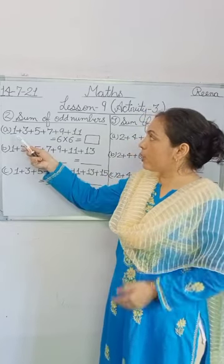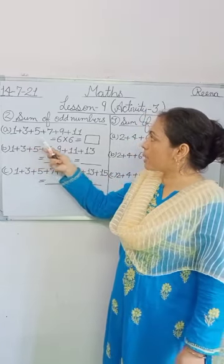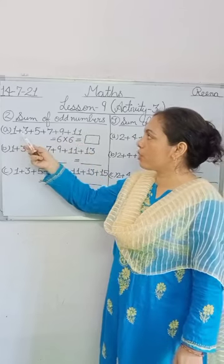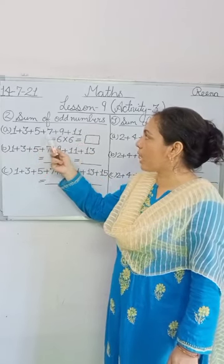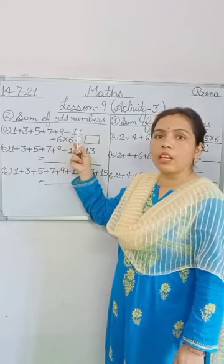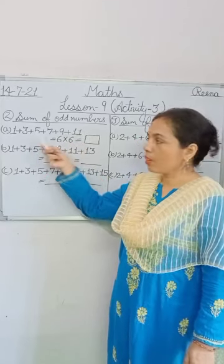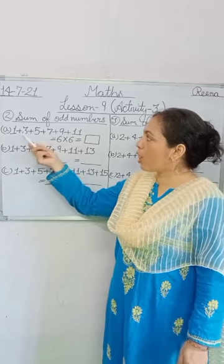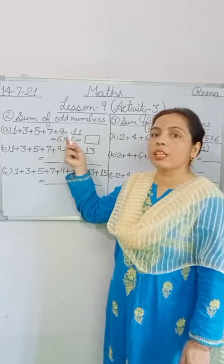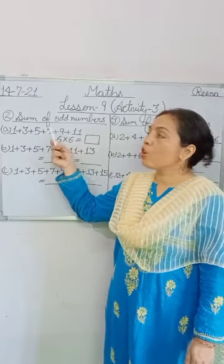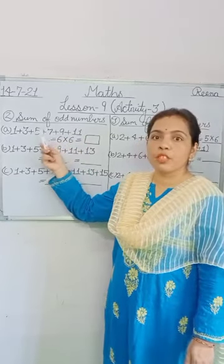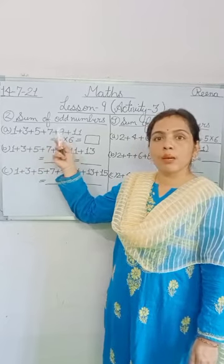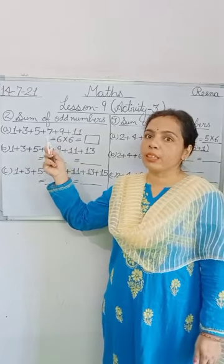Here, all numbers are odd numbers: 1, 3, 5, 7, 9, and 11. All numbers are odd numbers and all odd numbers are given in the form of a sum. Saree odd numbers sum ke form mein diye gahin.